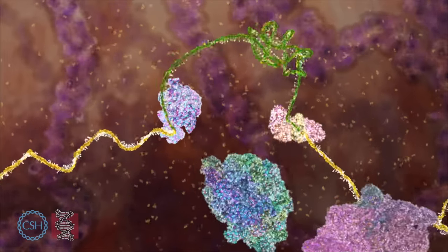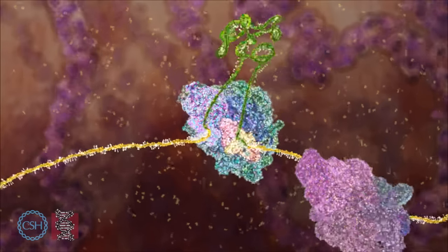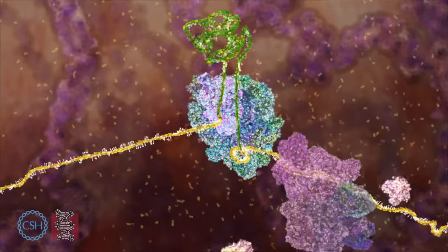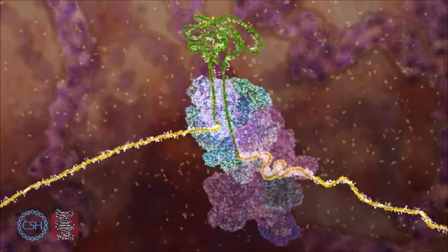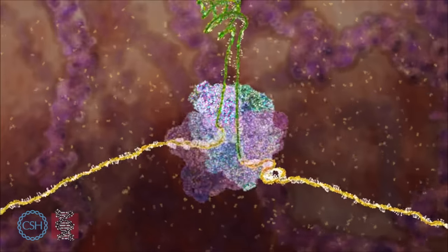Splicing begins with assembly of factors at the intron-exon borders, which act as beacons to guide small proteins to form a splicing machine called the splicesome. The animation is showing this happening in real time.